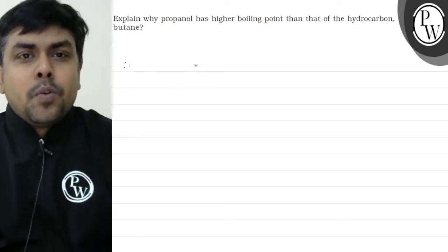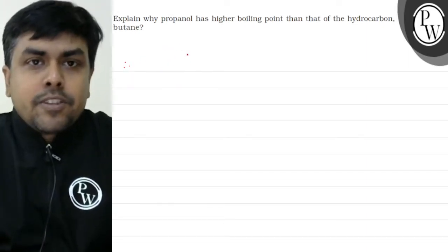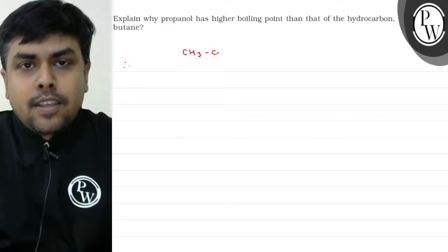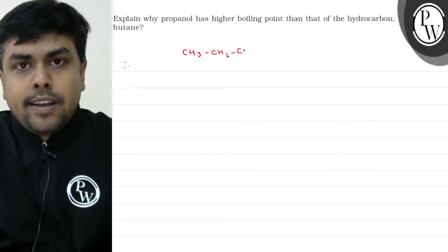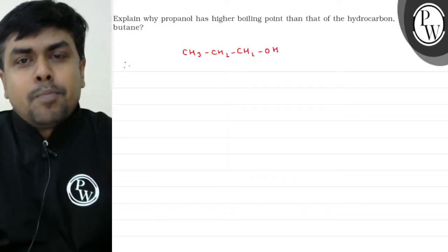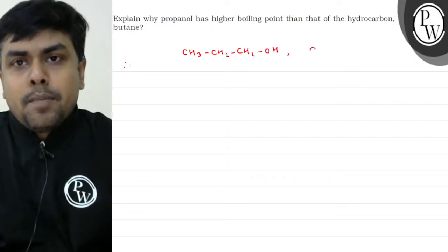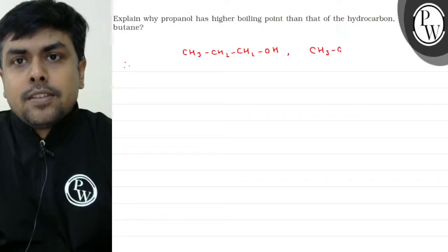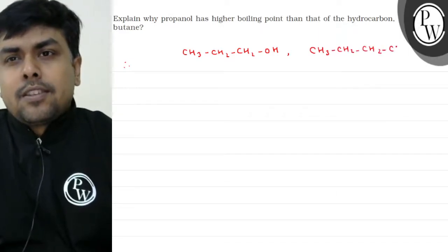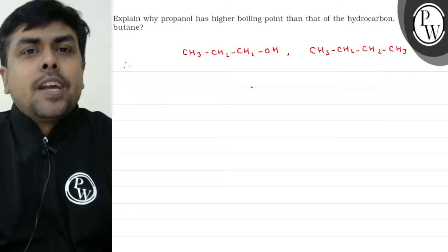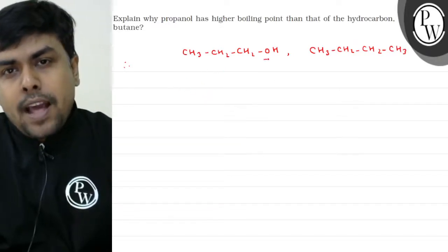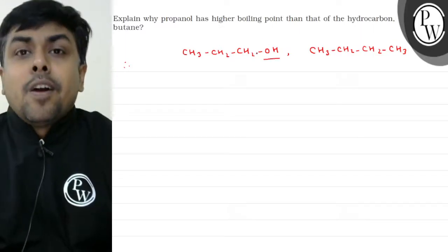First, let's write the structure of propanol. It's CH3CH2CH2OH — this is propanol. Aur butane ki baat karoon to it's CH3CH2CH2CH3 — this is butane. Ab mein baat karoon propanol ke upar.